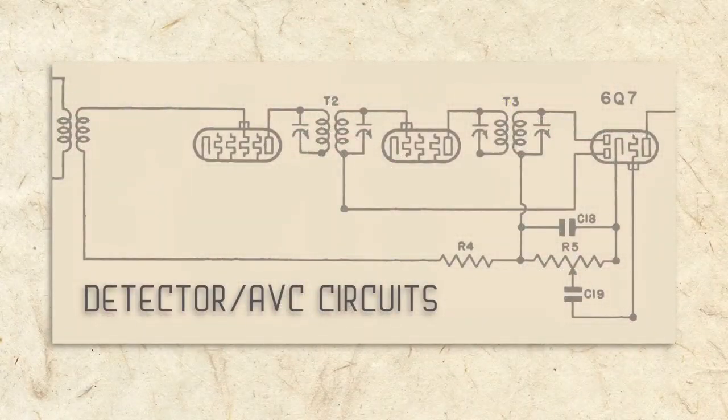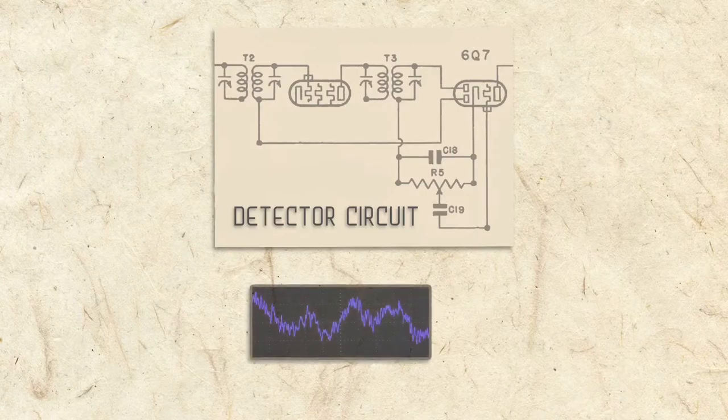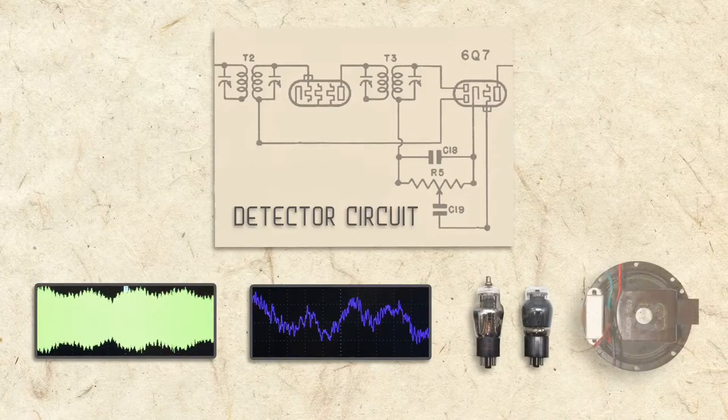This section of our schematic shows the detector and AVC circuits. Let's start with the detector. The detector circuit detects the audio signal on the IF so it can be amplified and sent to the speaker.